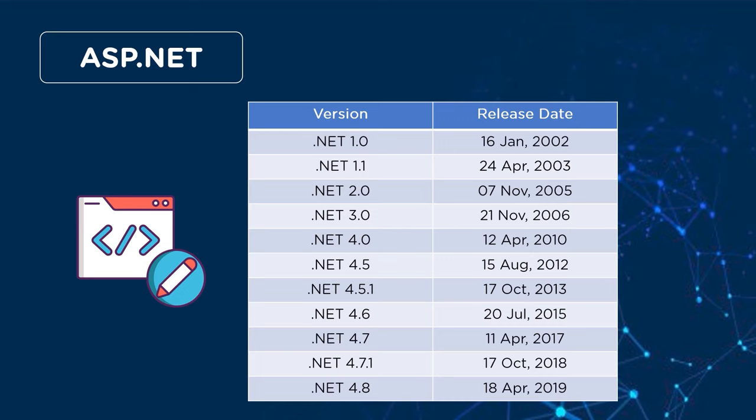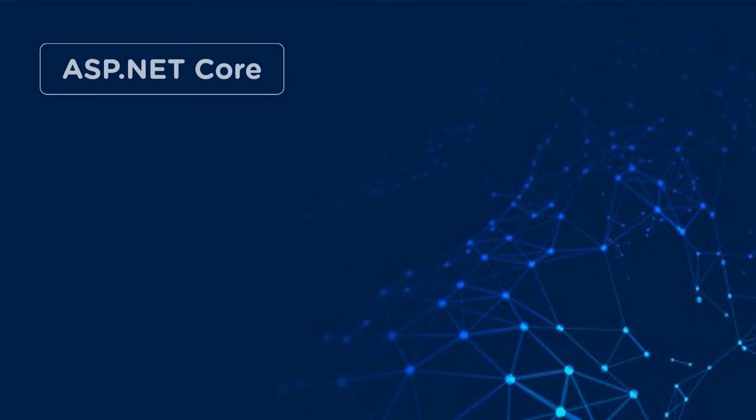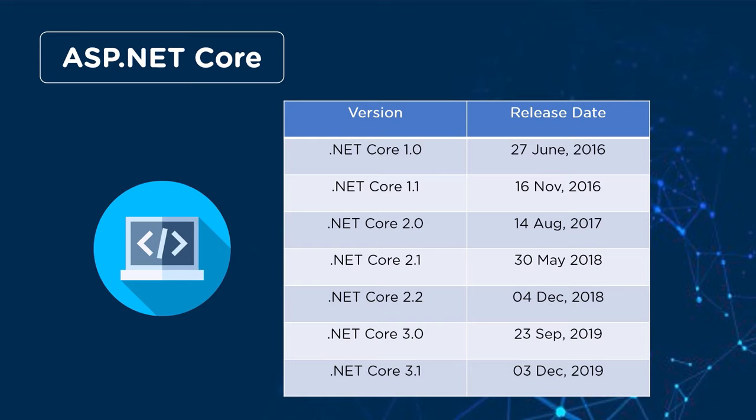Microsoft released the first version of ASP.NET Core on June 27th, 2016, named .NET Core 1.0. Later, on November 16th, 2016, .NET Core 1.1 was released with features to support more development. Then on August 14th, 2017, .NET Core 2.0 was released with Entity Framework features.